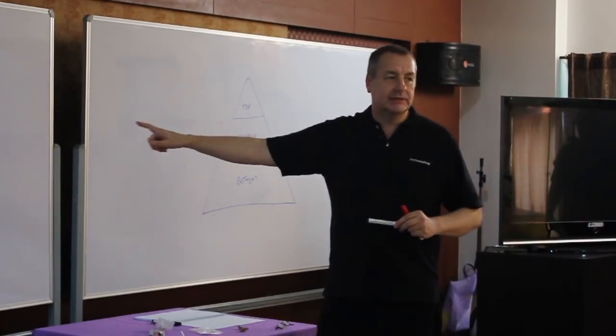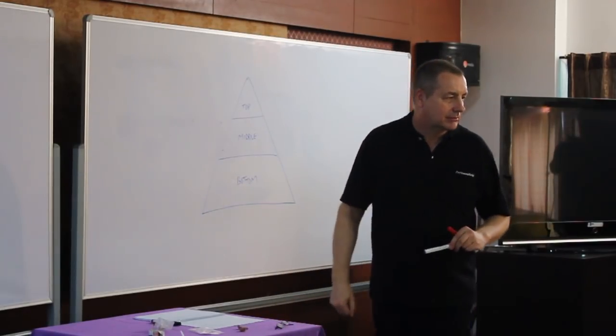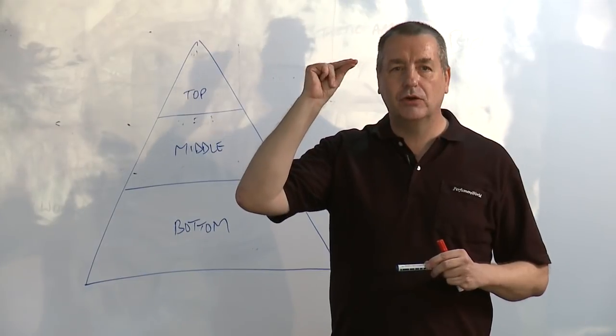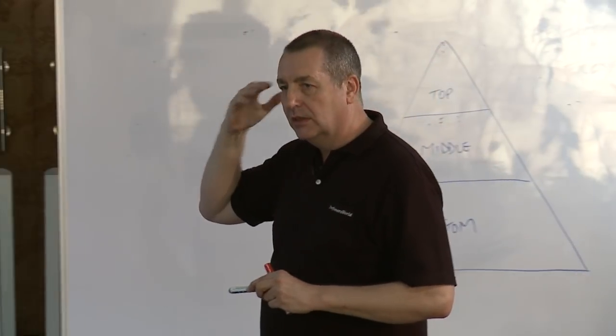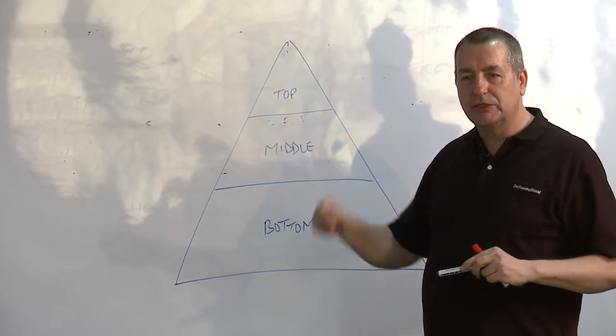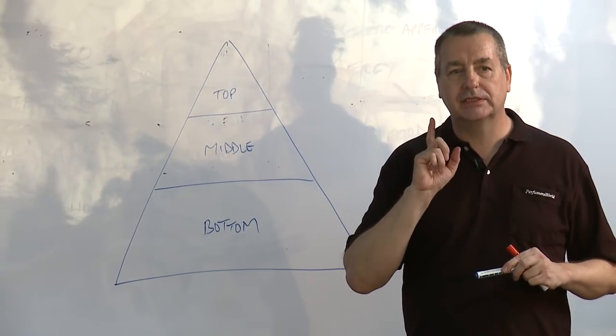If we smelt this 20 times, or until it just disappeared, our brain says it's not interested in that smell anymore, it doesn't change. What would happen when we smelt this one? The same perfume, but we just dipped it. This is the same perfume.